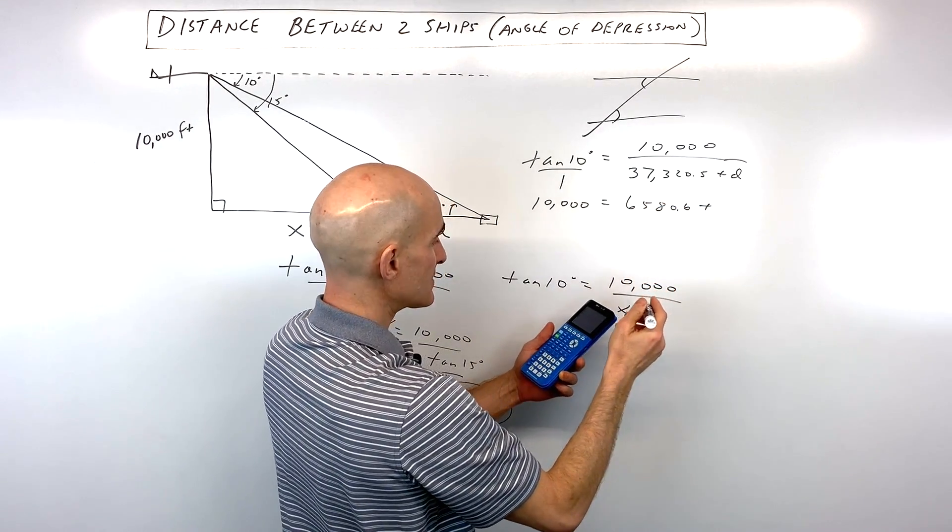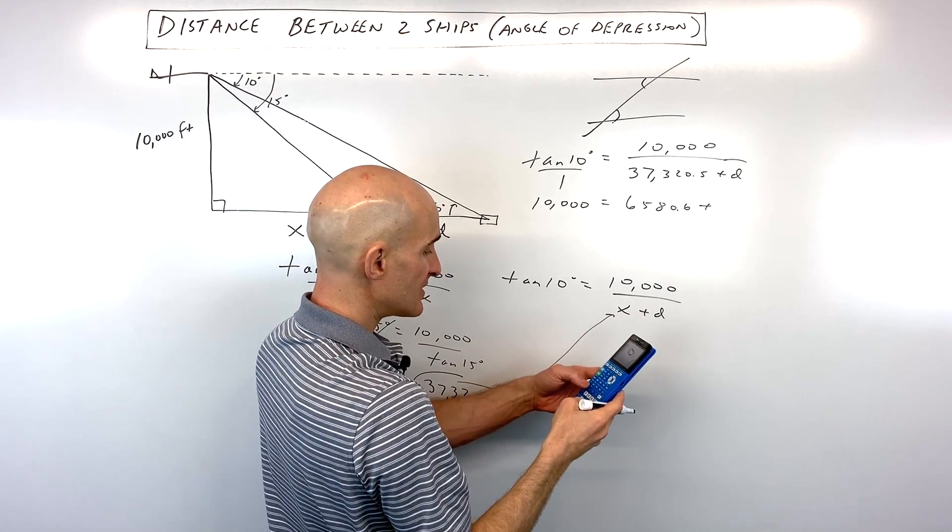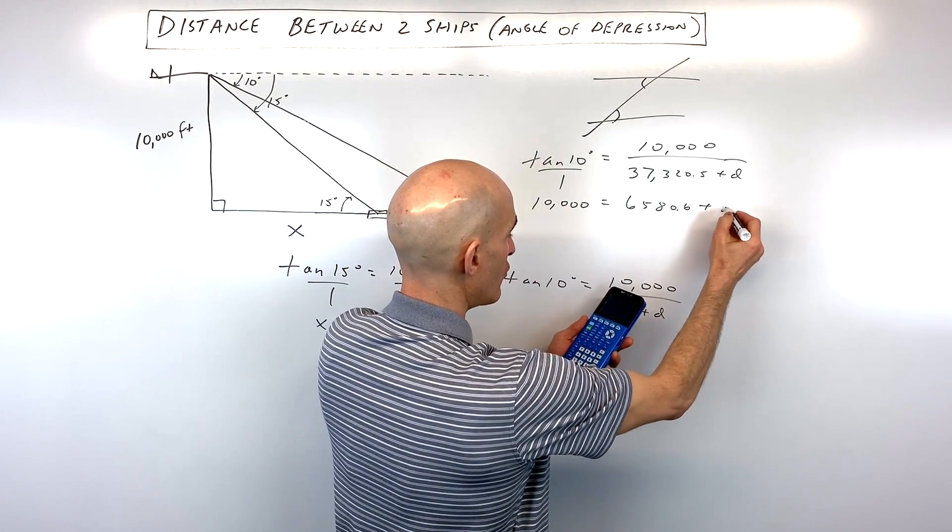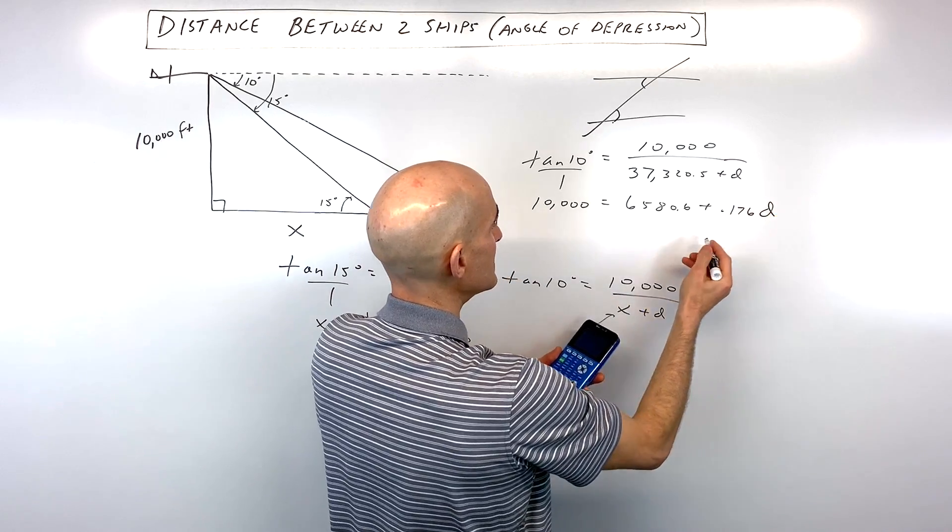6580.6 plus, let's see, tangent of 10 times d, which is about 0.176d.